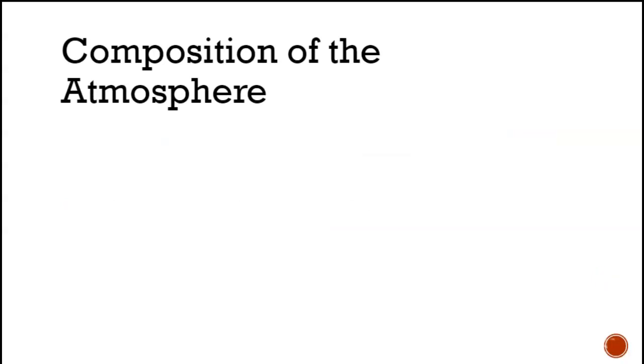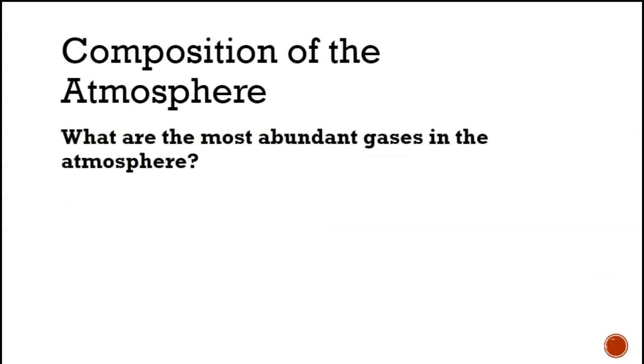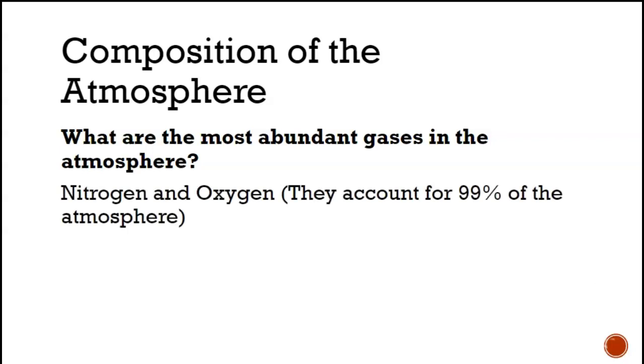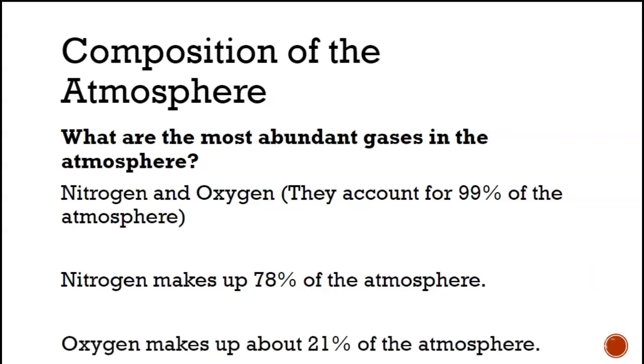Composition of the atmosphere. What are the most abundant gases in the atmosphere? Nitrogen and oxygen. They account for 99% of the atmosphere. Nitrogen makes up 78% of the atmosphere, and oxygen makes up about 21% of the atmosphere.